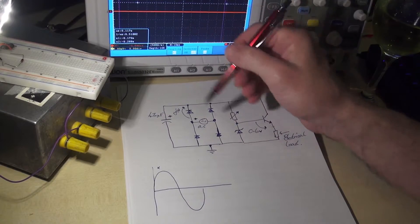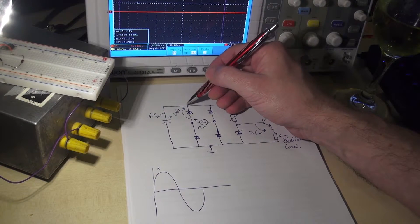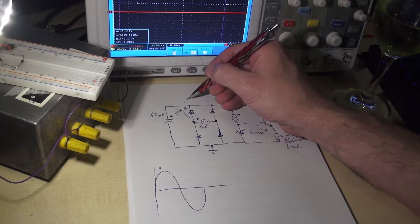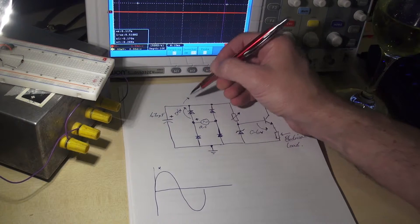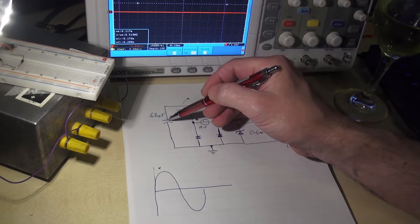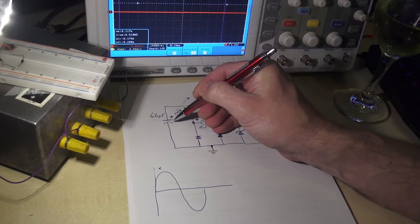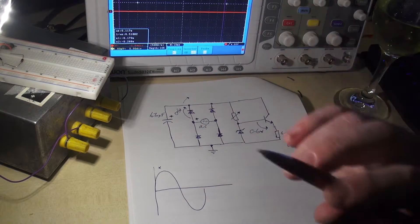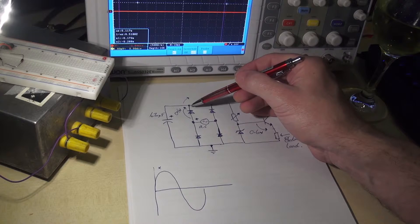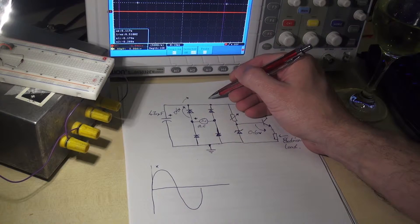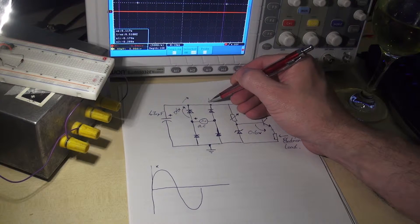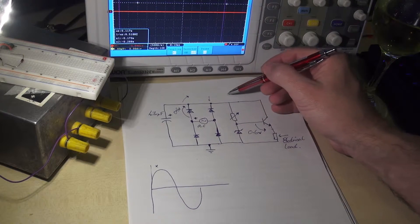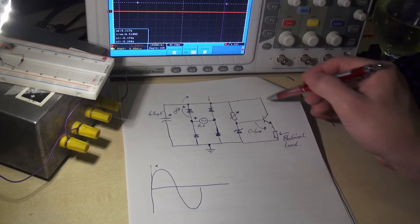When it conducts, the current, which is flowing in this direction here, cannot go through the capacitor because the capacitor, you'll recall, blocks direct current. Therefore, it can't actually go through this diode because this diode is reverse biased. So the current has to flow through the other components in the circuit.